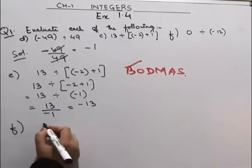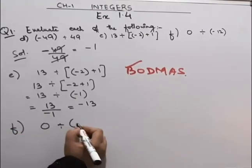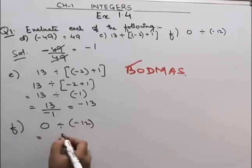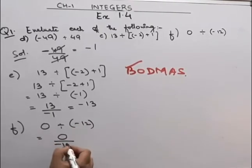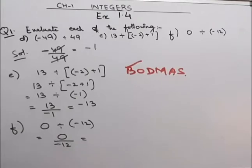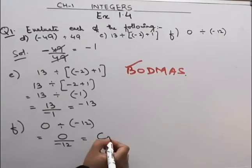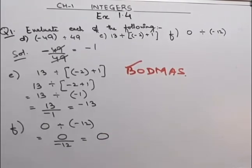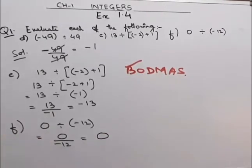Now coming to the F part. F is 0 divided by minus 12. The answer for the F part is 0.